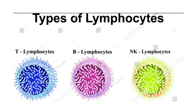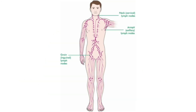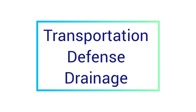The lymph vessels resemble veins due to their thin walls and the presence of valves. The lymph nodes are small globular masses of lymphatic tissue. The main functions of lymph are transportation, defense, and drainage.